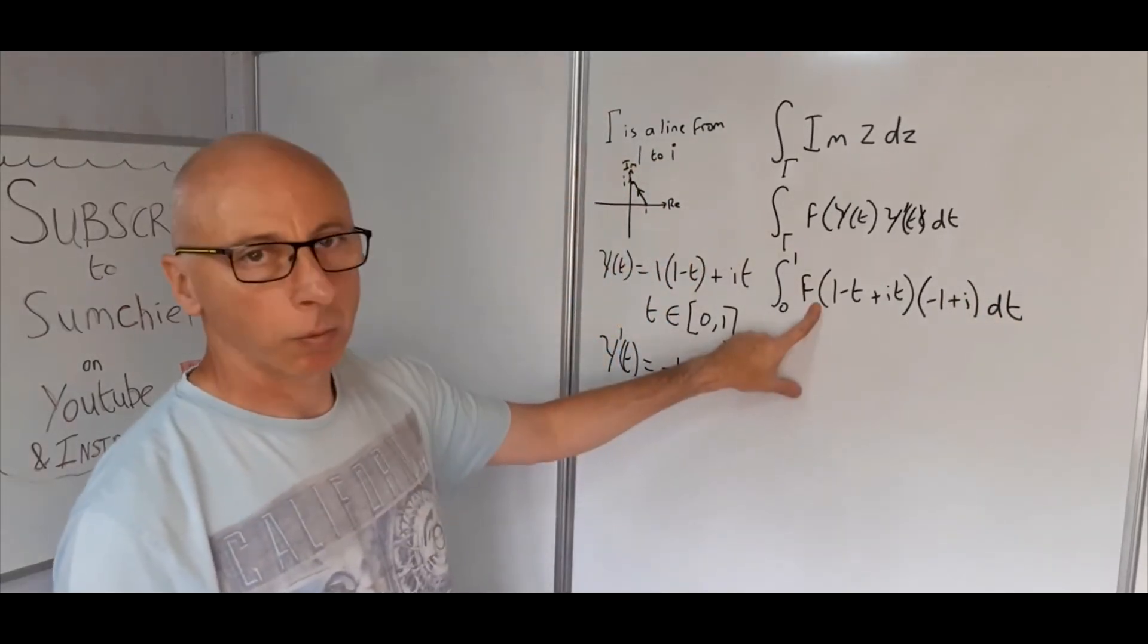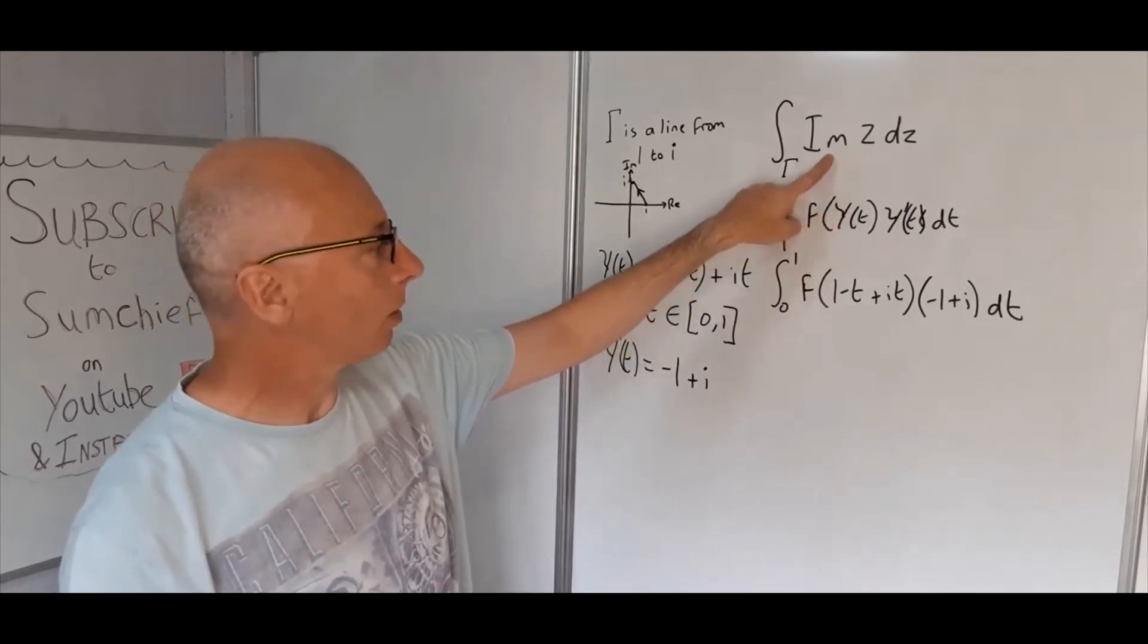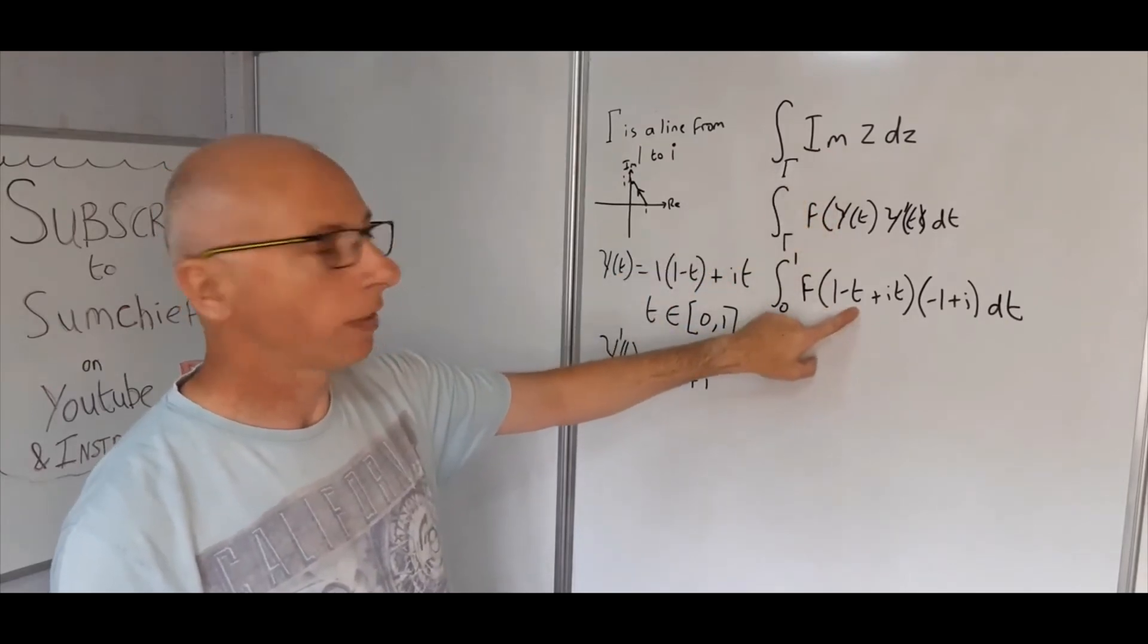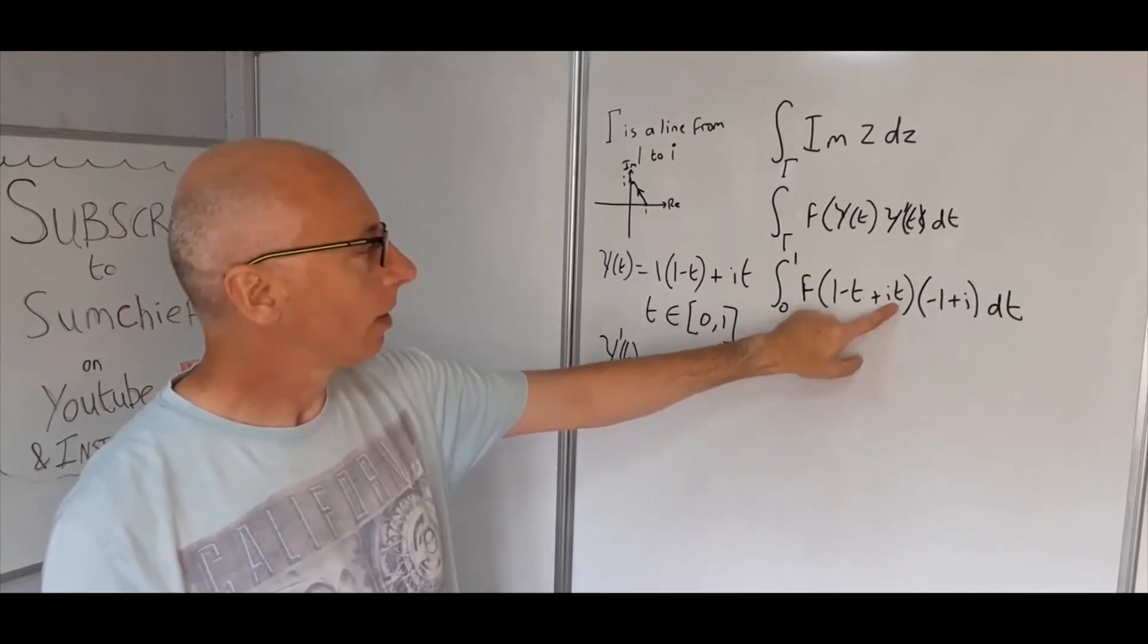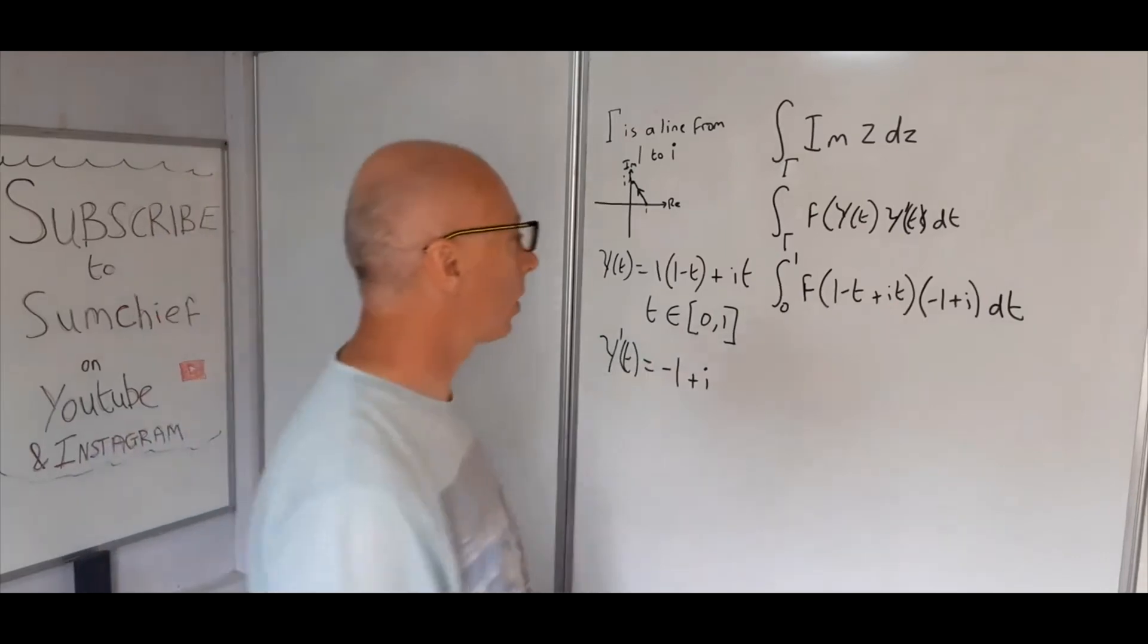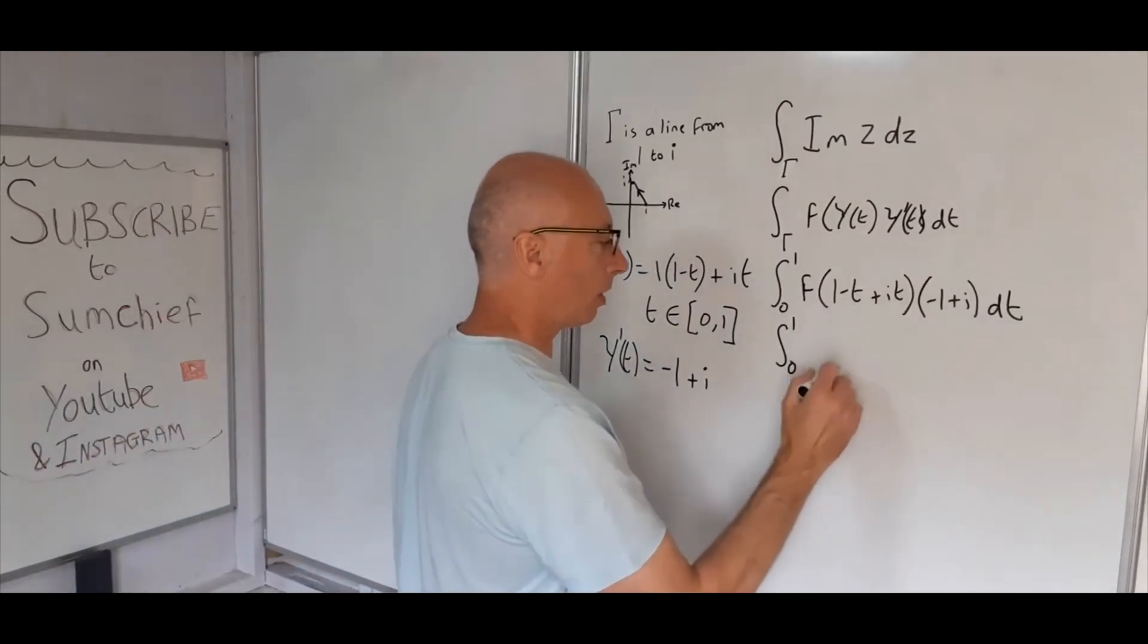The function we want to integrate is just the imaginary value. What is the imaginary value here? All we're left with is t, so t is the imaginary value. Basically, all we're left with now is t times (-1 + i) dt. We can integrate this quite easily - that's just a constant multiple, bring it out front and integrate t.